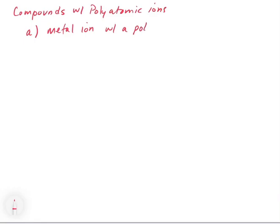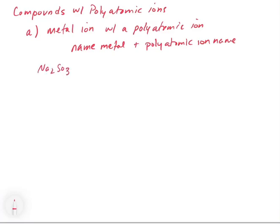Now let's take a look at compounds with polyatomic ions. The first case would be that you have a metal ion with a polyatomic ion. What you do is you name the metal and then you add to it the polyatomic ion name. An example would be Na2SO3. Sodium, that's easy, we name the metal sodium. And then we have to memorize what SO3 is. That's sulfite. So this would be sodium sulfite.